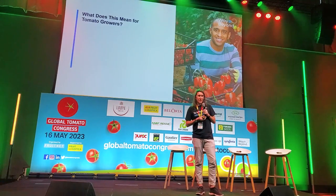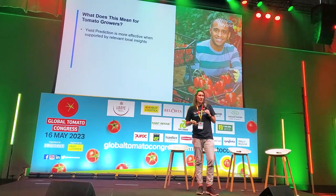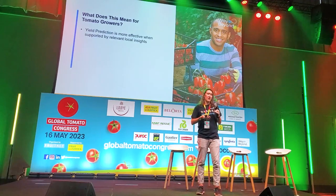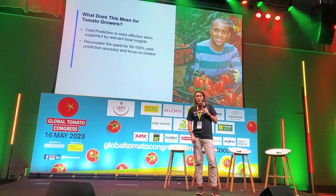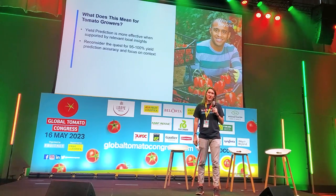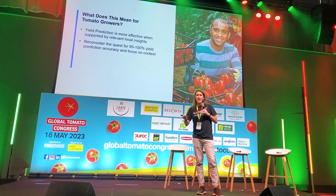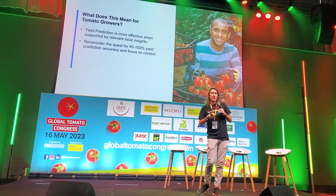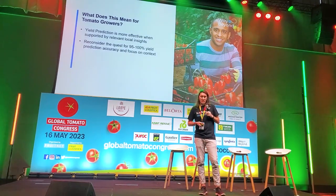So, what can we take away to optimize the greenhouse? First, yield prediction is an amazing tool — it's really helpful — but it's made even better when we understand the context and use other tools to get insight about risk factors affecting our production. We should reconsider the quest for 95 to 100% yield prediction accuracy. Should we spend our time chasing super highly accurate yield prediction, or spend it understanding the factors that cause our production to deviate and our swings to happen, to achieve more consistent production?